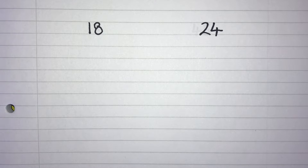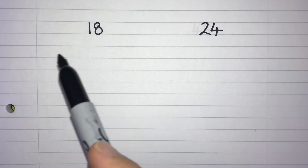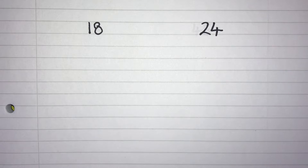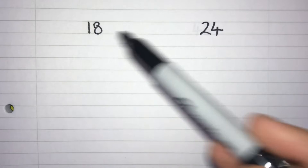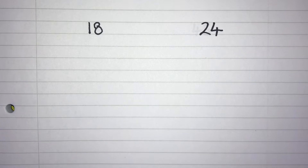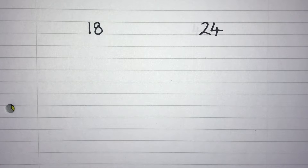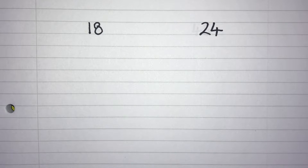When we're finding a highest common factor we could list out the factors of each of these numbers and then find the highest number that's in both lists. Or with our lowest common multiple we could similarly list out the multiples of each of the numbers and find the lowest one that's in both lists. But when we get to some slightly bigger numbers that becomes a little bit more tricky. So what we can do instead is use prime factors and Venn diagrams to find our highest common factor and lowest common multiple.